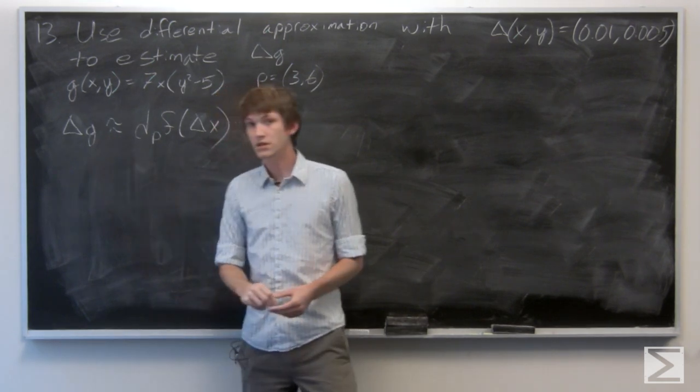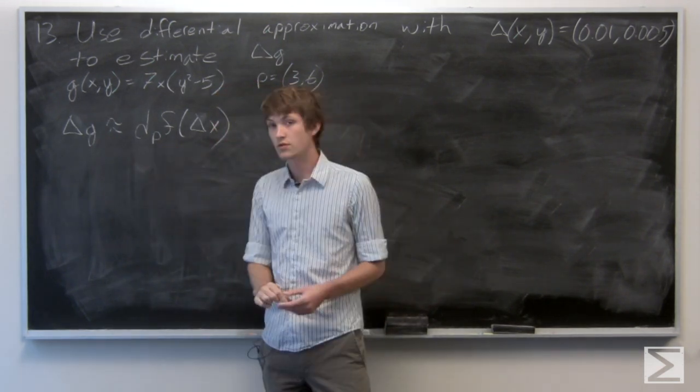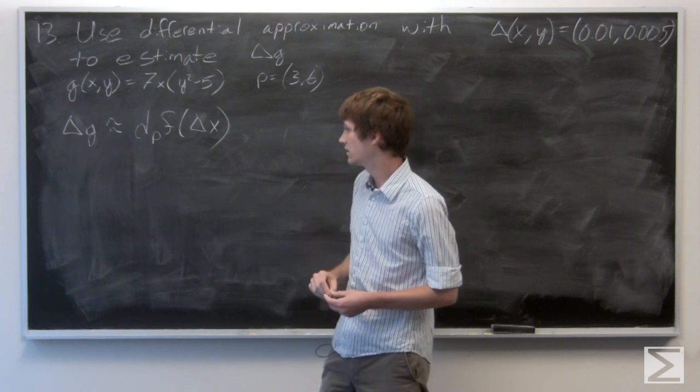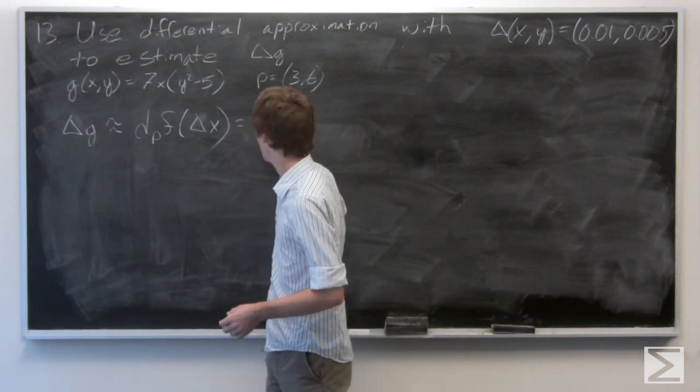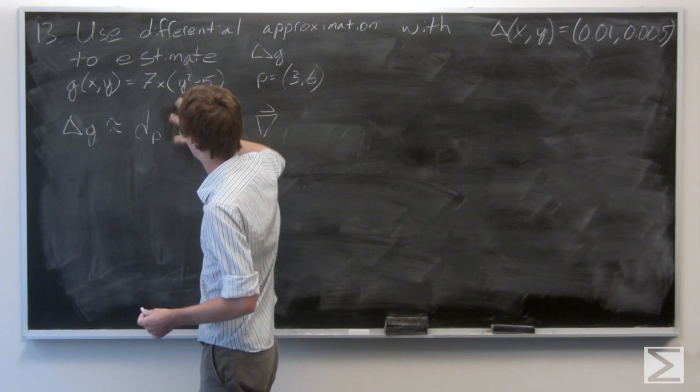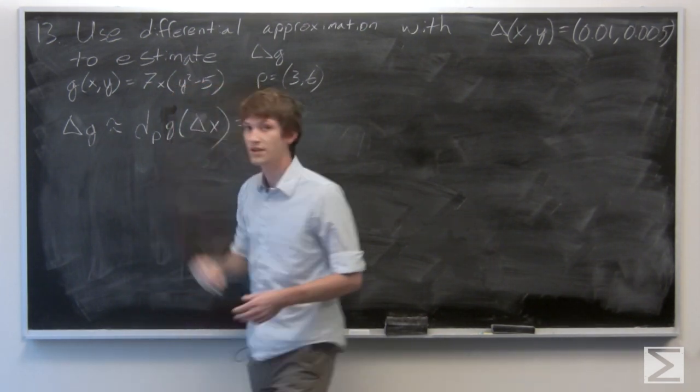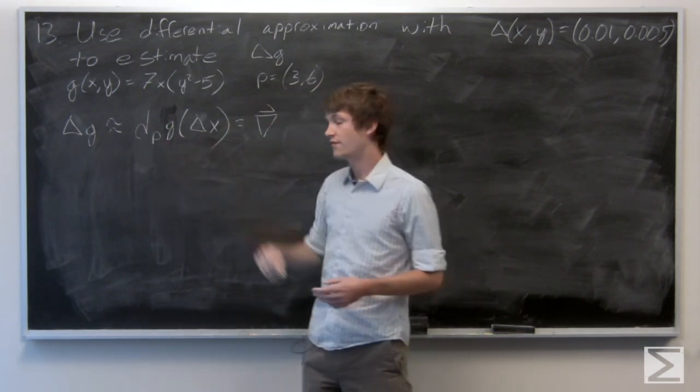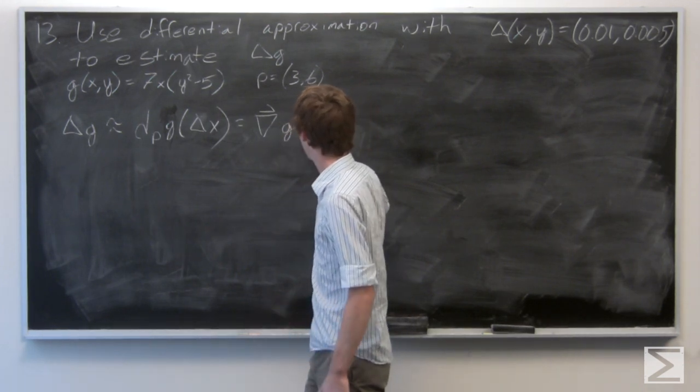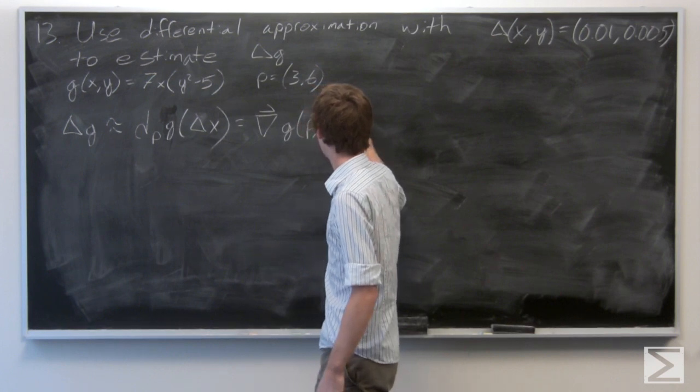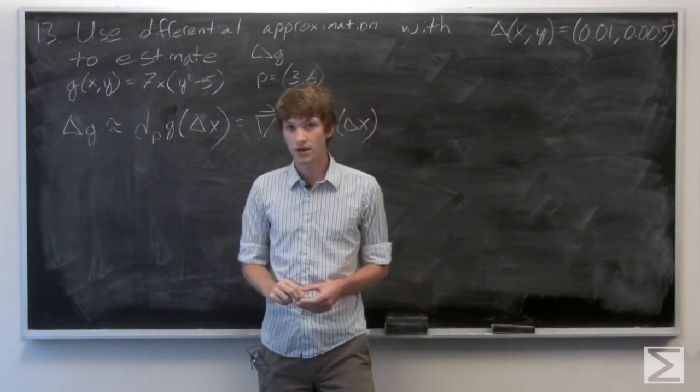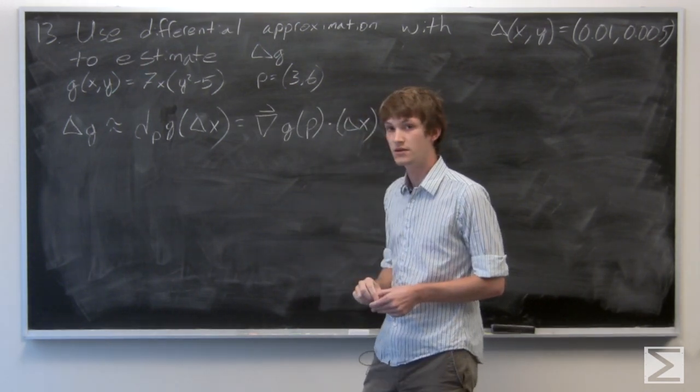So we know that delta g is approximately equal to the total derivative of g at p, which we know is the gradient of g at p dotted with delta x.